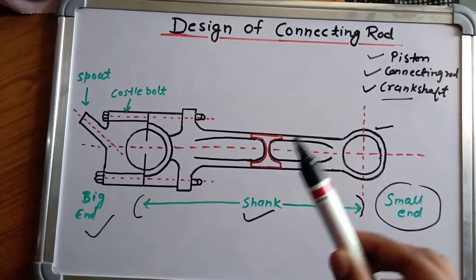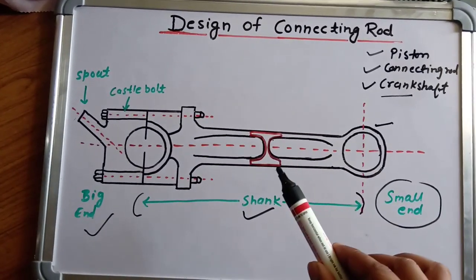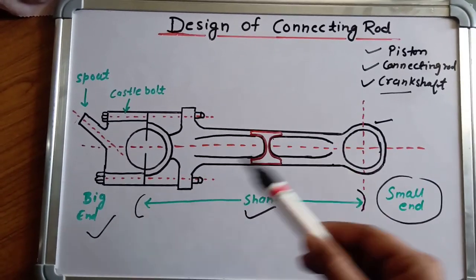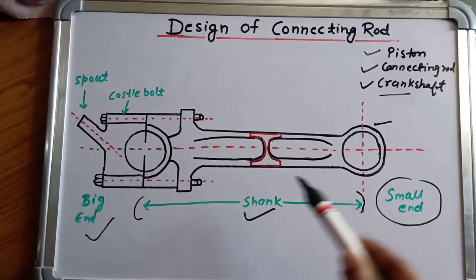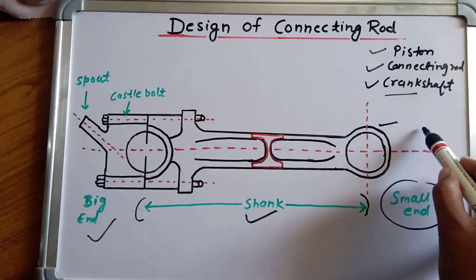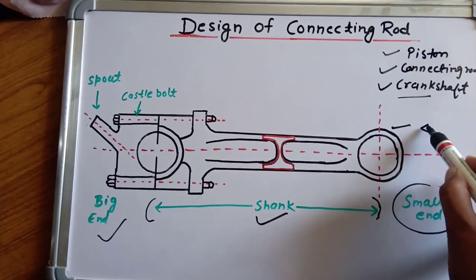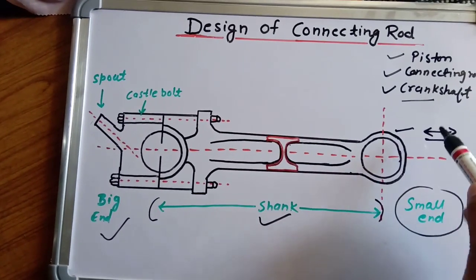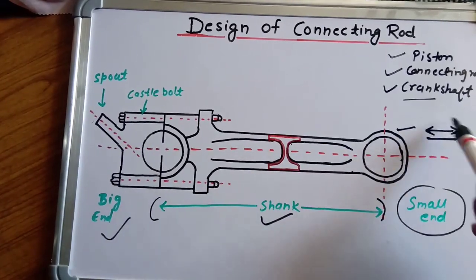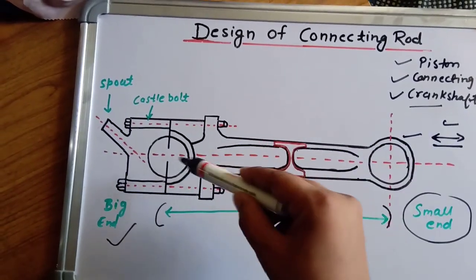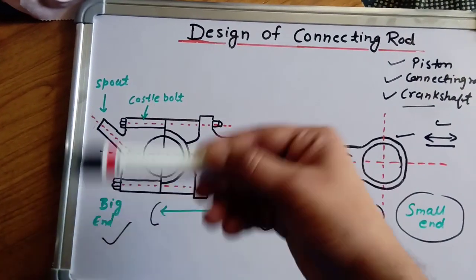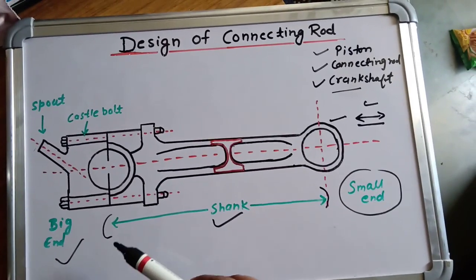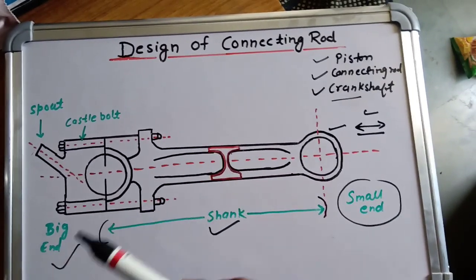The connecting rod converts the reciprocating motion of the piston into rotary motion of the crankshaft. The piston moves in a reciprocating motion and the connecting rod converts this into the rotary motion of the crankshaft.